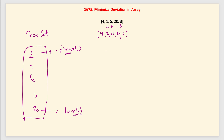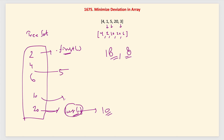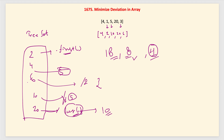The first deviation is 20 minus 2 which is 18. We divide the maximum (20) by 2 to get 10; next deviation is 10 minus 2 = 8. We divide 10 by 2 to get 5, remove it and add 5 back. The maximum is now 10 again; still 10 minus 2 = 8. Divide 10 by 2 to get 5 again. Next maximum is 6; deviation is 6 minus 2 = 4, better than 8. Divide 6 by 2 to get 3. Our set is now [2, 3, 4, 5].